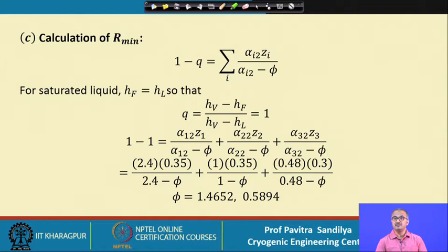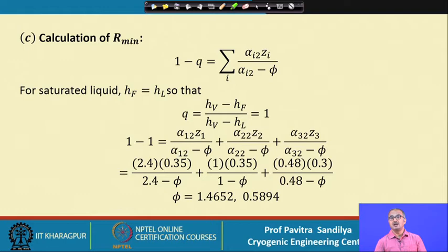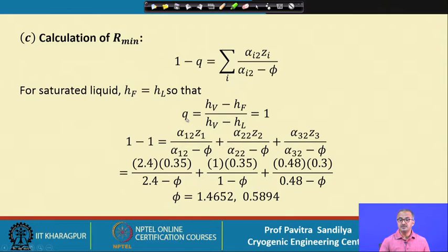Next, we determine the minimum reflux ratio using the Underwood equation. In this equation we need the Q value. Since the feed is a saturated liquid, Q is defined as (H_V − H_F) / (H_V − H_L), and substituting H_F = H_L gives Q = 1. We plug Q = 1 into the Underwood equation.